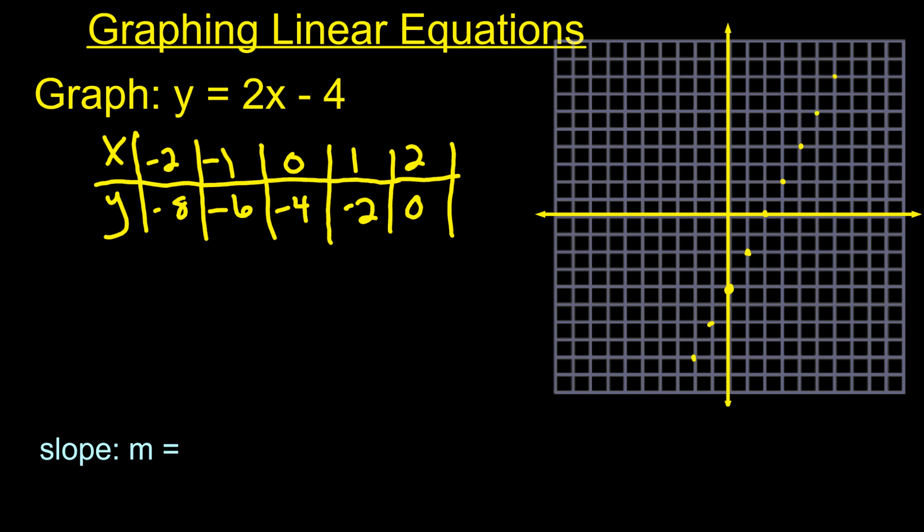And then eventually what you're going to do is you're going to grab your ruler or whatever straight thing you have. And you're going to draw yourself a nice straight line through all of those points. So that's your line. And what the equation for a line is, is it gives you every single point on that line.